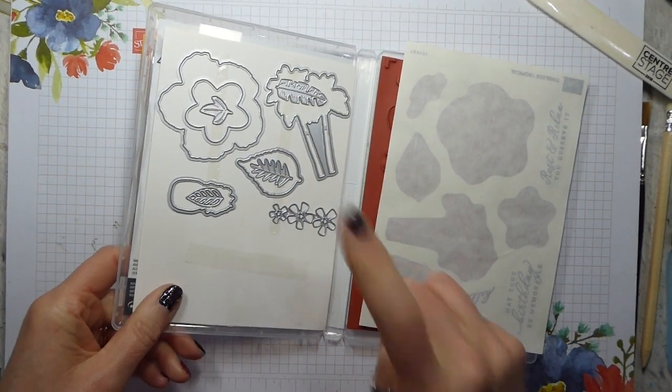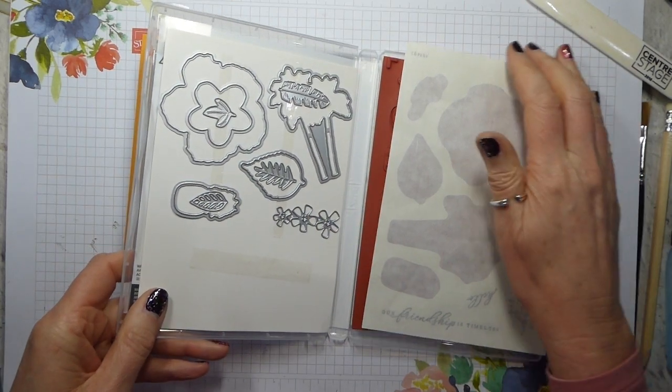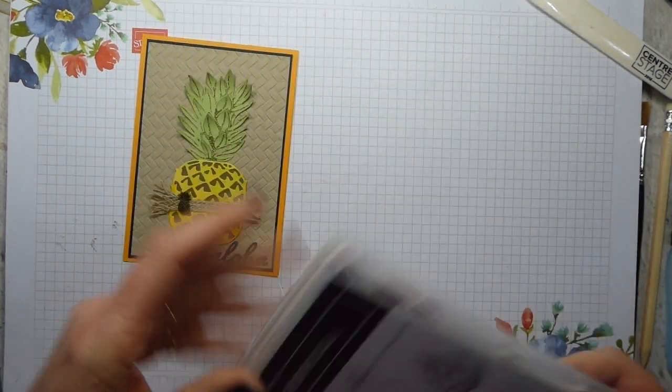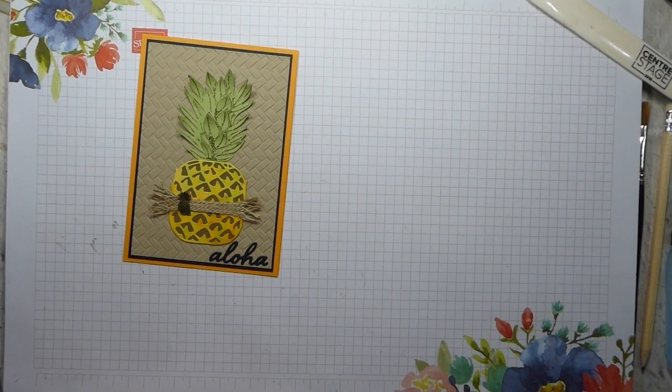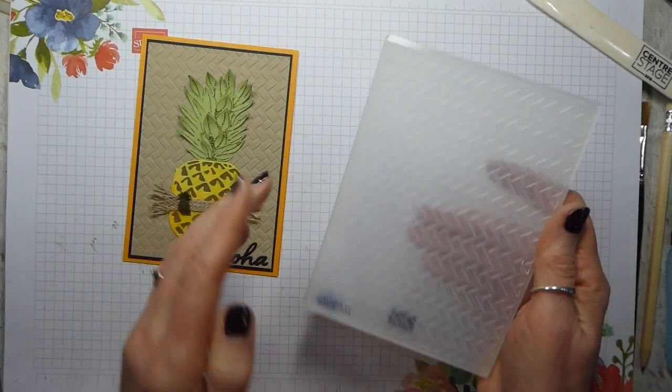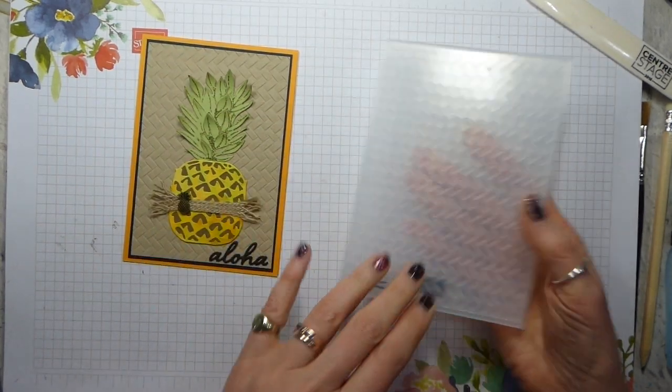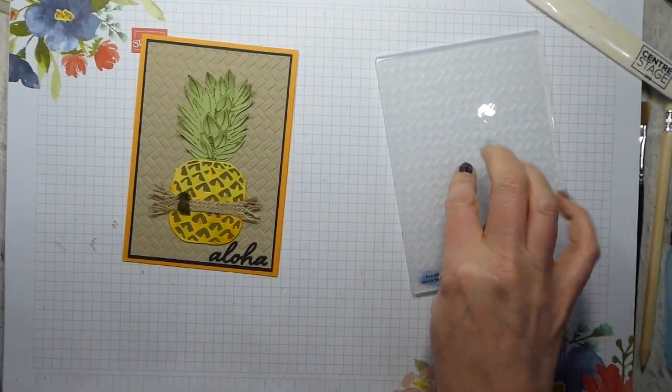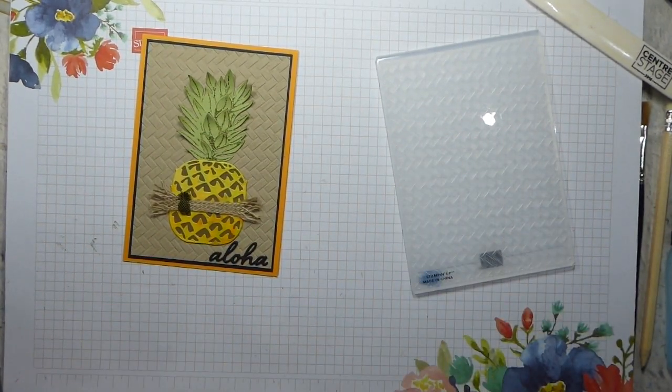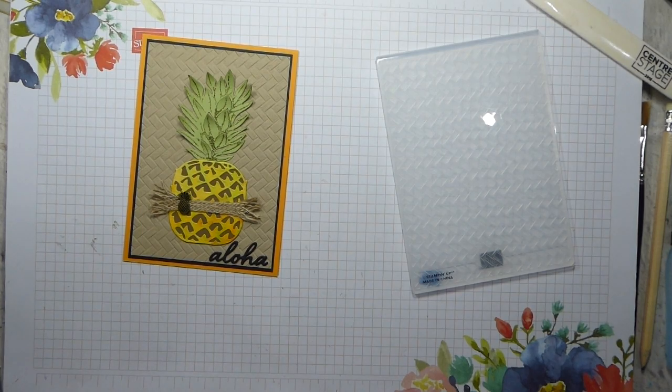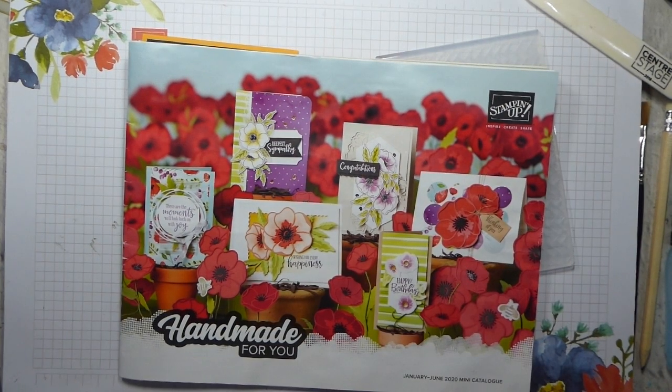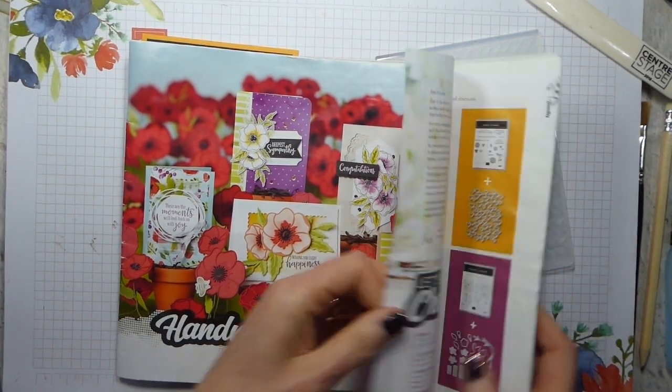Some of the dies are out because we'll be using them. I have used this bundle before, but I thought I would have another look at it. The bundle, or rather the suite, also includes this wonderful textured weave 3D embossing folder, and of course, because it's now after the 3rd of January, I can show you the inside of the catalogue!